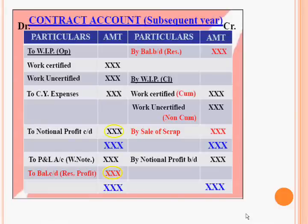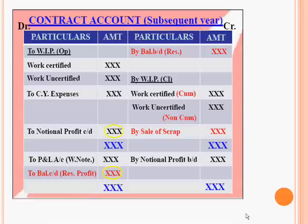In the subsequent year's proforma, the debit side carries forward the amount from the first year's contract account — that is, work certified, work uncertified, and other expenses. The balance brought forward is the reserve profit. This year's work certified and work uncertified go to the credit side, and the difference again gives the notional profit, which is transferred to the profit and loss account according to the formula.